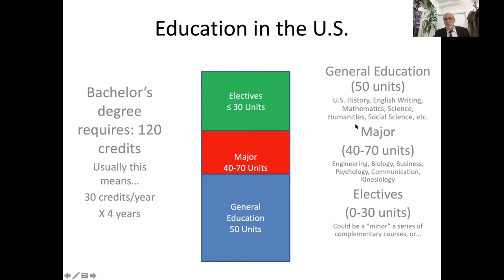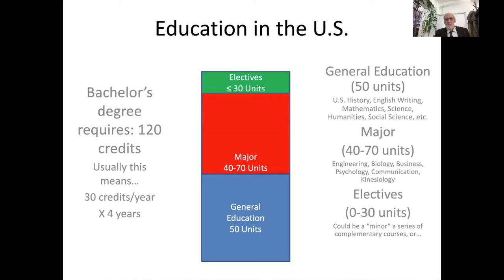Your major or specialization consists of 40 to 70 units or credits — that could be engineering, biology, business, communication, or in your case, art and graphic design — and your electives, which will be 0 to 30. If electives is 30, then the major will be 40 and general education will be 50, adding up to 120. If the major goes up, electives goes down, but all students require 50 credits in general education.